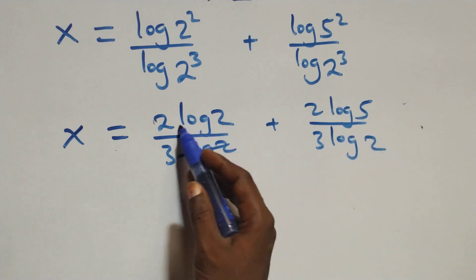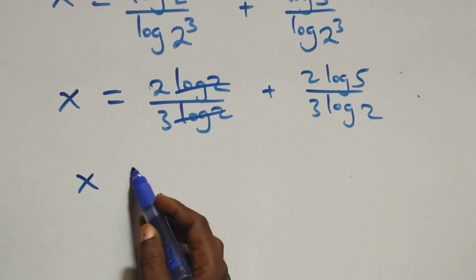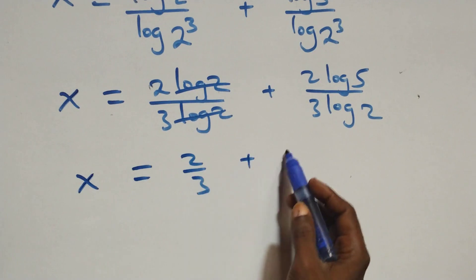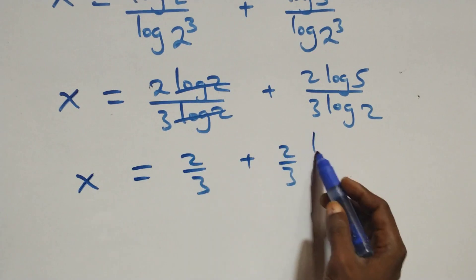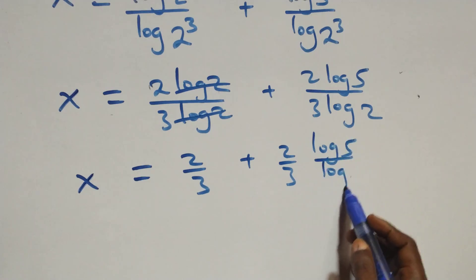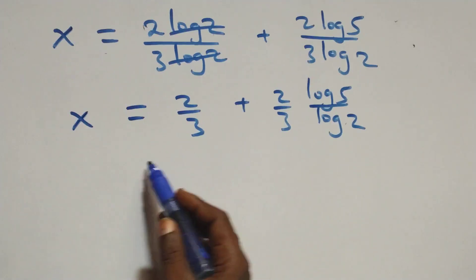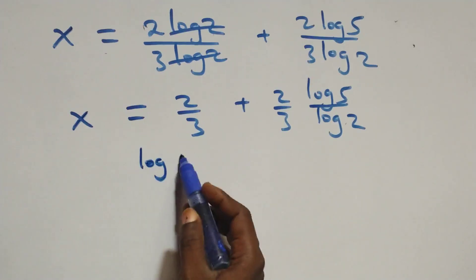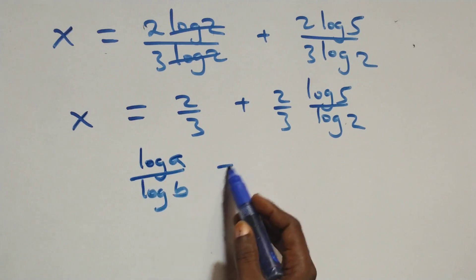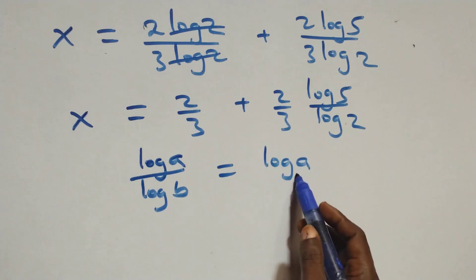Now, log 2 cancels each other in the first fraction. This becomes x equals to 2 over 3 plus (2 over 3)·(log 5 over log 2). We then apply the change of base rule: log a over log b can be written as log a to base b.